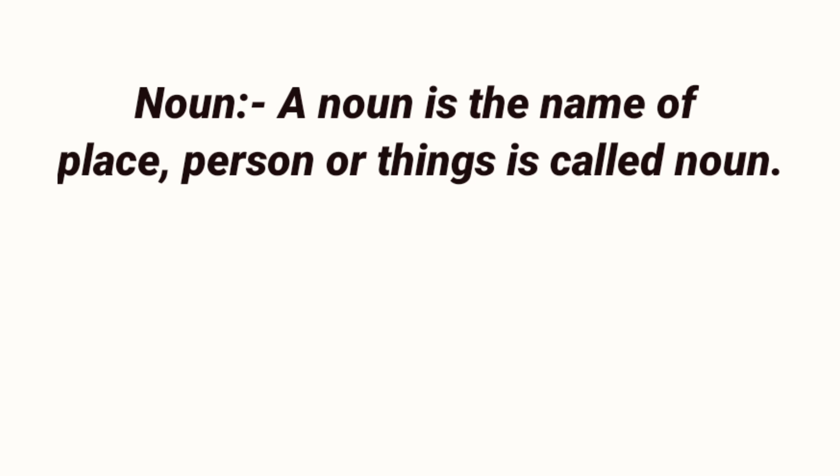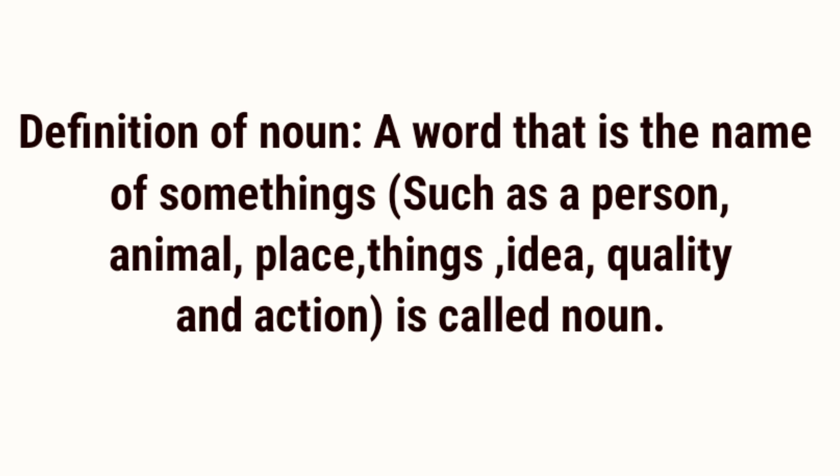Noun use kehte hain jo kisi jagah, shakhs, cheez ke baare mein samjhaaye. Main yeh nahi kehta ke yeh galat hai, par yeh mukammal definition nahi hai. Isko jaanne ke liye video ko chhodh chhodh kar na dekhein. Definition of noun: A word that is the name of some things such as a person, animal, place, thing, idea, quality, and action is called noun. Kisi bhi naam ko noun kehte hain.